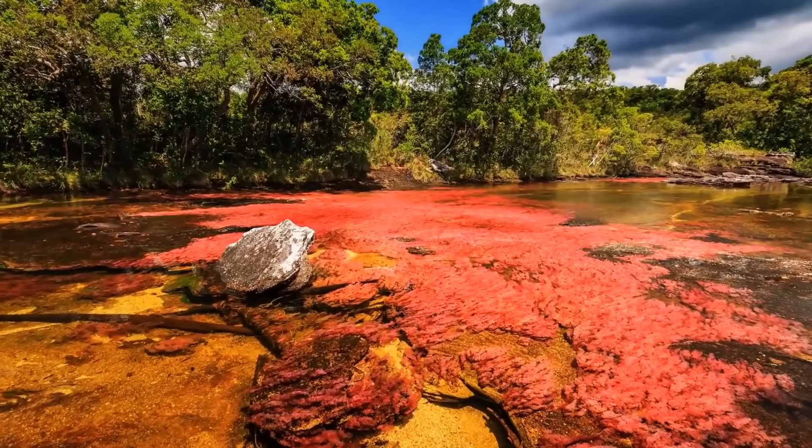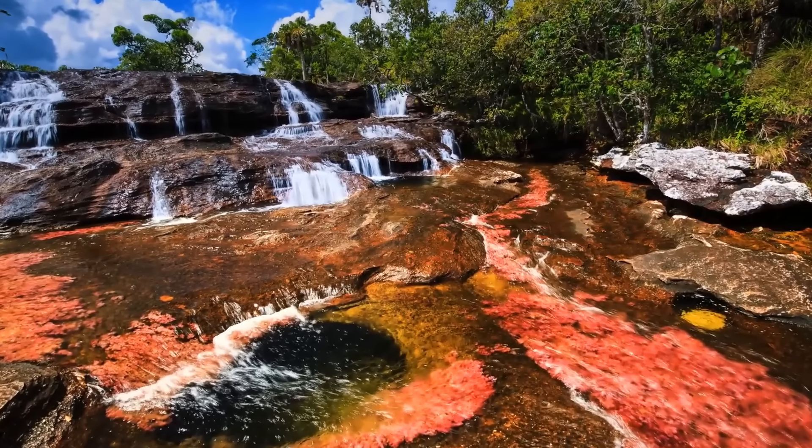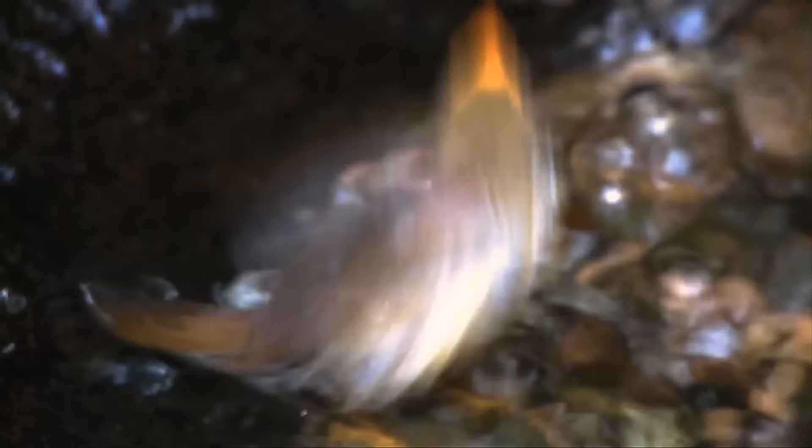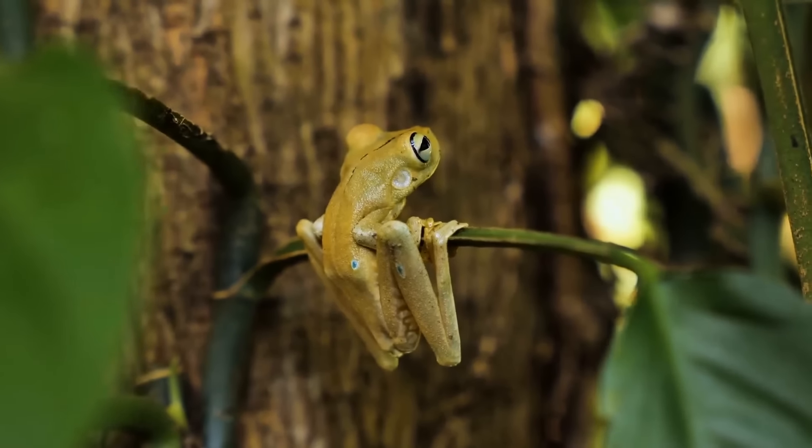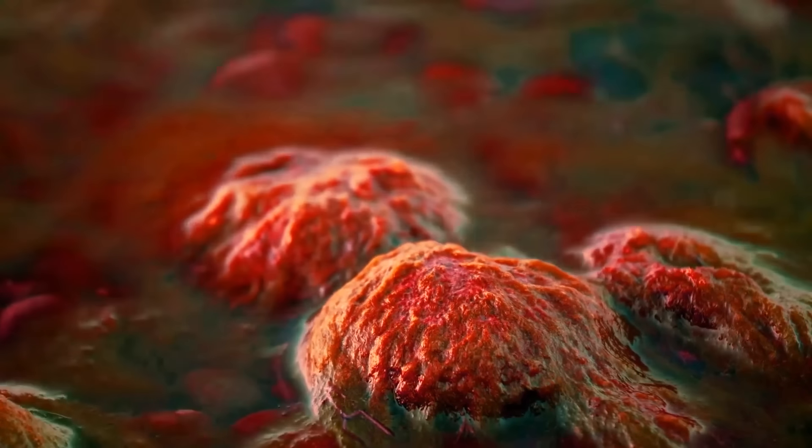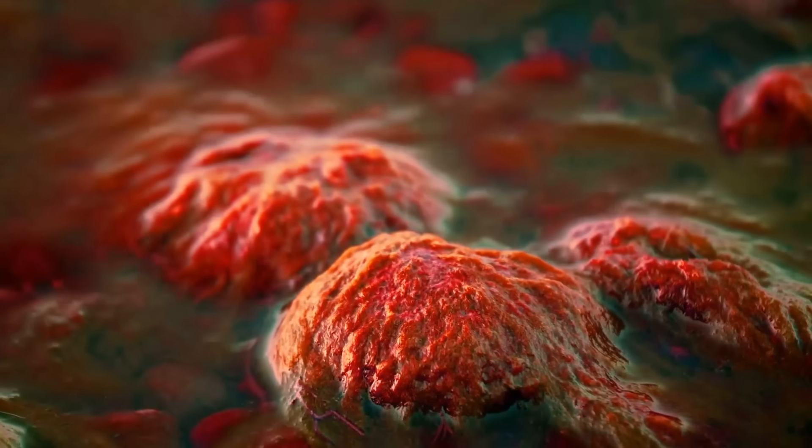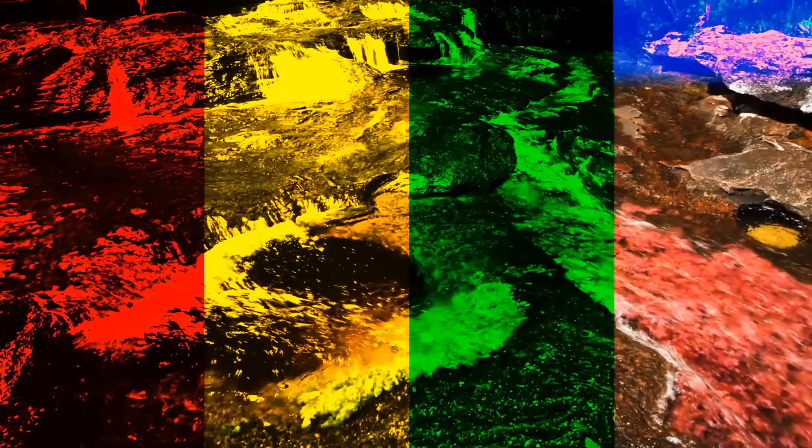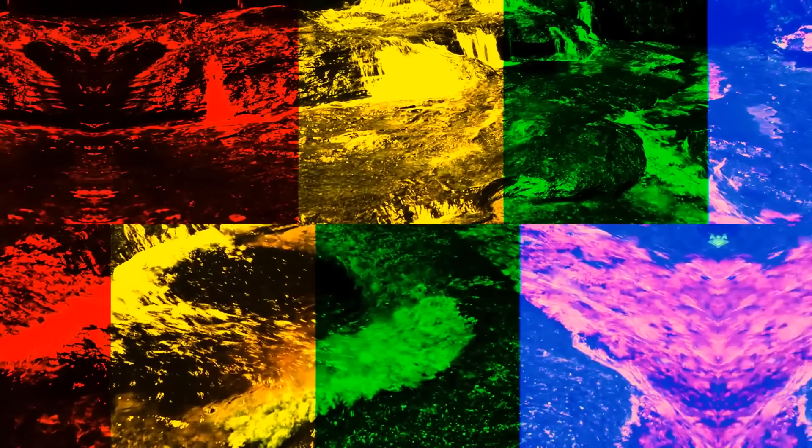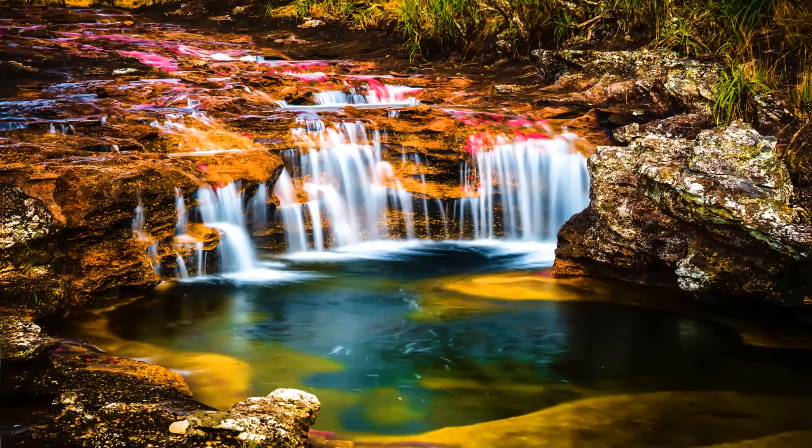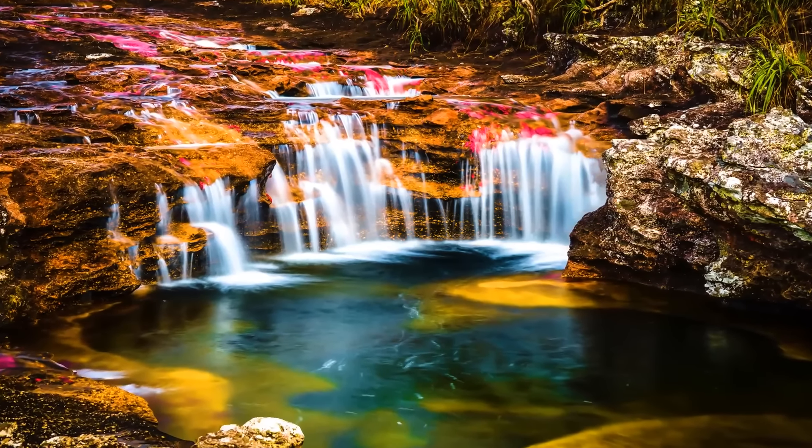The river of five colors, Cano Cristales in Colombia, has the unofficial title of the most beautiful river in the world. For most of the year, it looks like any other regular river. The real magic happens between the wet and dry seasons when the water level is just perfect. This unique river floor is lined with a special plant, and when the conditions are right, it bursts into a dazzling display of colors. Think vibrant reds, stunning yellows, and lush greens, all mingling with the blue water. It's like stepping into a living rainbow with a thousand shades in between. This phenomenal display only lasts for a few weeks, from September through November.